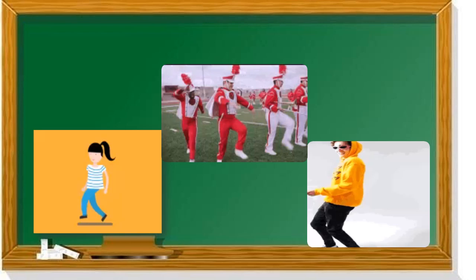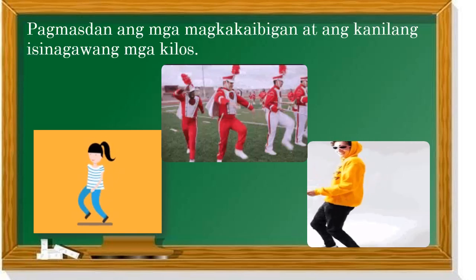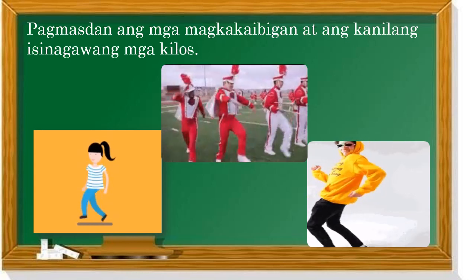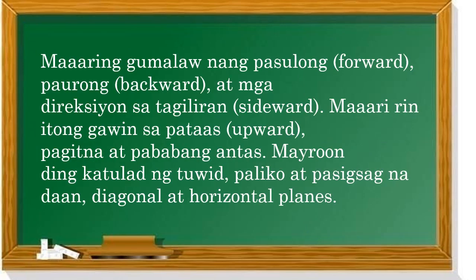Tingnan natin ang mga sumusunod na galaw. Mapapansin natin na ang mga larawan ay nagmamartsa ng pasulong, patalikod, at pababa. Isang halimbawa ng mga galaw na ating nakikita sa pang-araw-araw na gawain. Maaaring gumalaw ng pasulong (forward), paurong (backward), at mga direksyon sa tagiliran o sideward. Maaaring rin itong gawin sa pataas o upward, paggitna, at pababang antas. Mayroon din katulad ng tuwid, paliko, at pasigsag na daan, diagonal at horizontal planes.